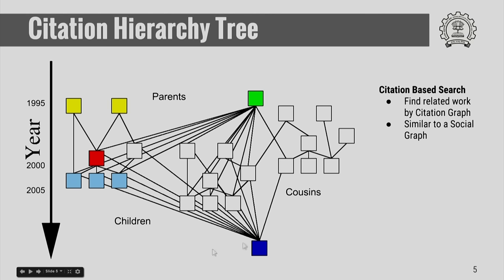This is very similar to a social graph — you might have heard of social graphs, as in friends and friends of friends, which you see in social networks. References are also organized that way, and it is easier to find them because they are all related in the same area.